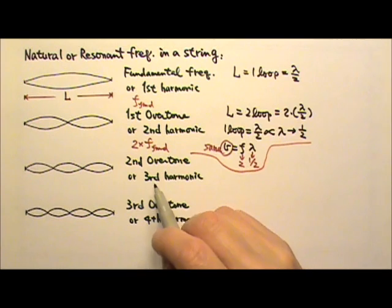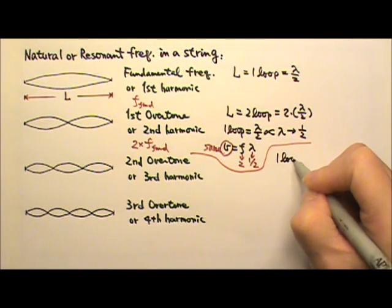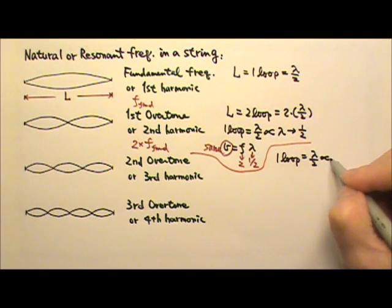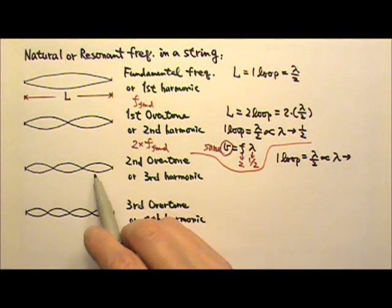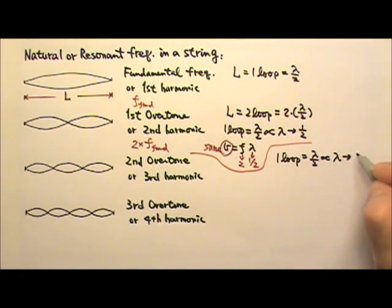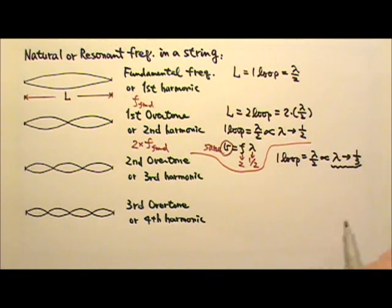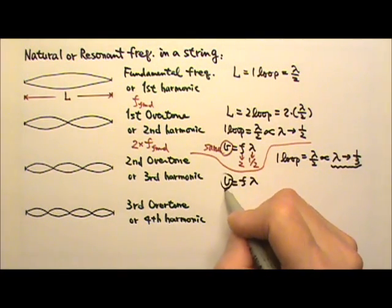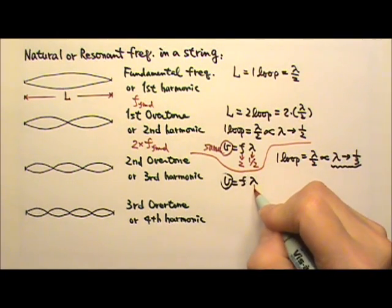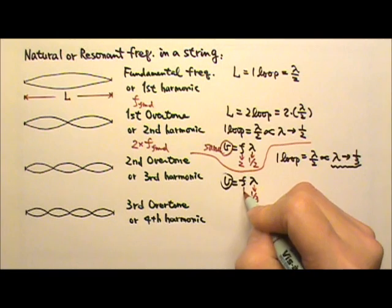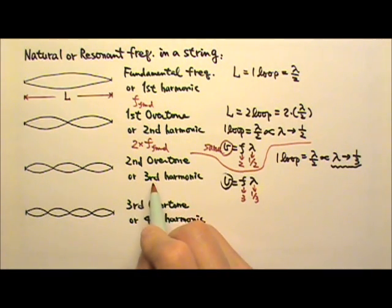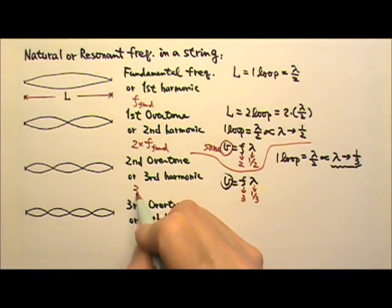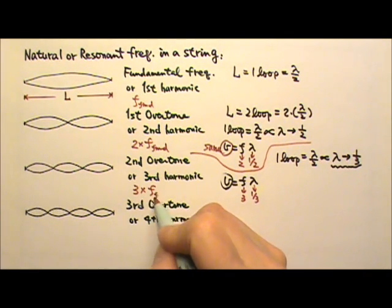For the second overtone or the third harmonic, the length of one loop is again half a wavelength, which means it's proportional to the wavelength. The length of one loop compared to the fundamental frequency is one-third of that, so the length of one loop changes by a factor of one-third. That means the wavelength changes by a factor of one-third. Because speed equals frequency times lambda and the speed is the same, if the wavelength changes by a factor of one-third, the frequency must triple. So the third harmonic must have a frequency that is three times the fundamental frequency.